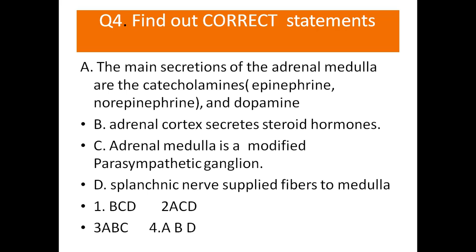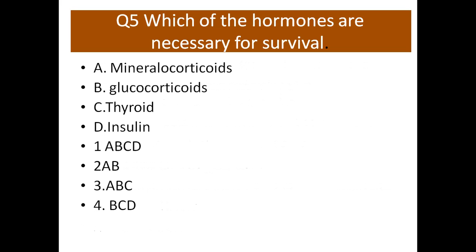Question number five: which of the hormones are necessary for survival — mineralocorticoids, glucocorticoids, thyroid, and insulin? Options: A) mineralocorticoids, B) glucocorticoids, C) thyroid, D) insulin. Answer choices: ABCD, A and B, ABC, or B, C and D.